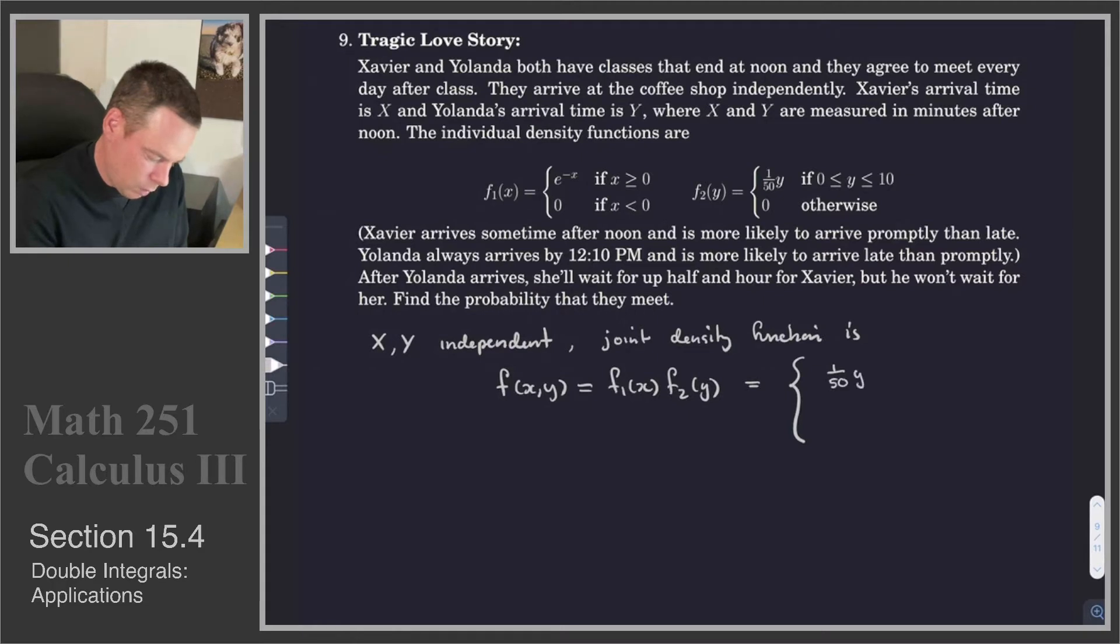And so that's given by this piecewise defined function, 1 over 50 Y e to the negative X. And that is if X is greater than or equal to 0, and 0 is less than Y is less than 10, and 0 otherwise. So there's the joint density function.